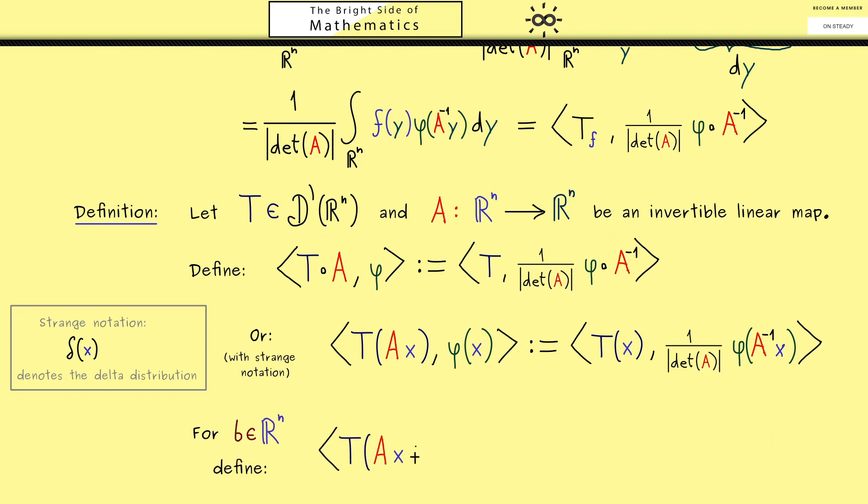With this we can define a new distribution T(Ax+b). And now by the same idea as above we just shift the translation to the test function. In other words there we have A inverse of x minus b. Hence you see without any problems we can define a new distribution under an affine transformation.